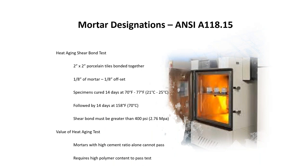The 118.15 heat aging test works as follows: two 2x2 porcelain tiles are bonded face-to-face with a 1/8-inch offset, cured for 14 days at room temperature (70–77°F), then placed in an oven at 158°F for 14 days. After this 28-day regime, the specimen must still achieve a shear bond strength greater than 400 PSI — a very high threshold. Passing this test requires a high-quality polymer with good flexibility and deformability, not just increased cement content.